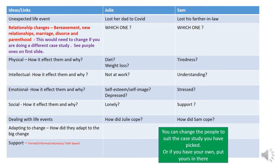Then dealing with the life events — how did Julie cope during the time she lost her dad, and how did Sam cope? Not only did he lose his father-in-law, but he's also trying to support Julie and his family, so you would need to explain how they dealt with that life event. The next section is adapting to change — how did they adapt to the big change of losing Julie's dad, and what sort of things may they have gone through to help deal with losing her father?